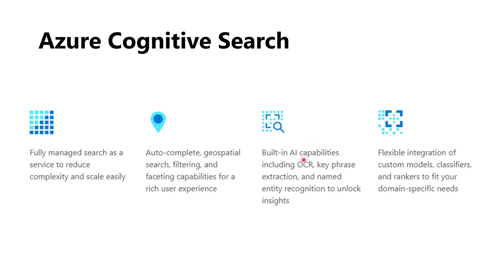As for building AI capabilities, we optionally include the way to add skills for images, for OCR (optical character recognition), for text like key phrases, extract entities, detect the language. These are optional steps we create, and it gives us a flexible integration of custom models, classifiers, and rankers to fit our domain-specific needs.